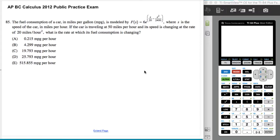So the fuel consumption of a car in miles per gallon is modeled by F of S, and then you can see that entire equation, where S is the speed of the car in miles per hour. If the car is traveling at 50 miles per hour, so at the moment when S is 50.